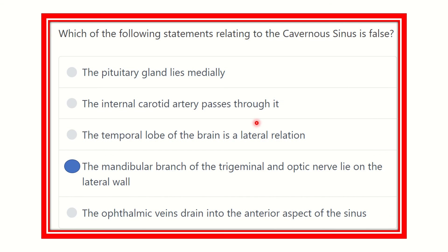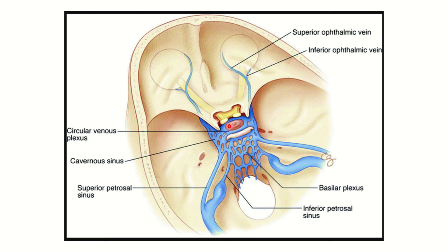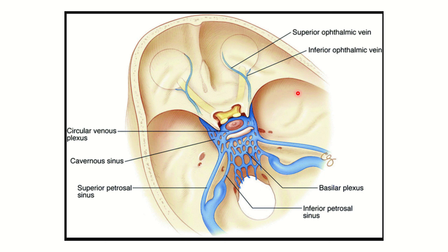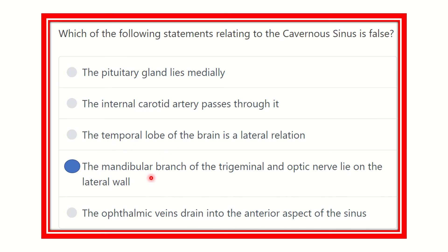Now evaluating each option: the pituitary gland lies medially — true, as we can see it lies medially to each cavernous sinus. The internal carotid artery passes through it — also true. The temporal lobe of the brain is a lateral relation — true, as the temporal lobe is located laterally. The mandibular branch of the trigeminal nerve and optic nerve lie on the lateral wall — this is NOT true, because the mandibular division (V3) is not within the cavernous sinus.